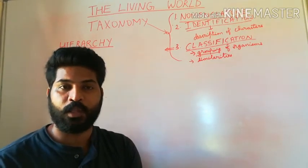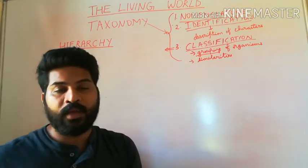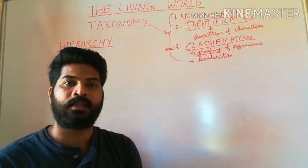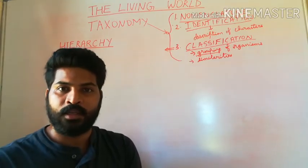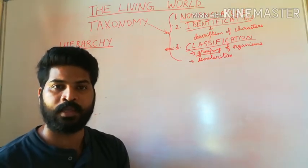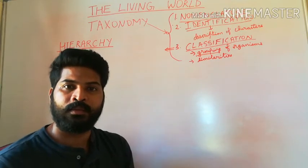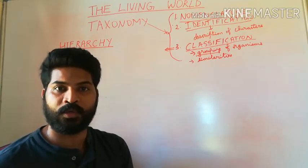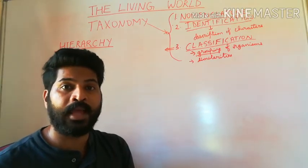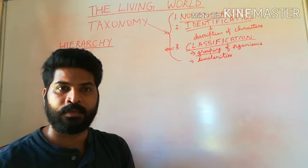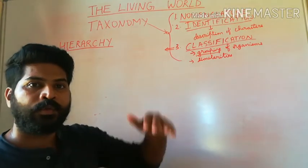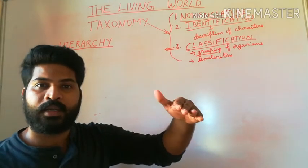Let us say it is an animal. There are millions of animals — animals include fishes, reptiles, birds, mammals, insects, etc. So which type of animal is it? Is it a bird, a reptile, or a mammal? Let us say it is a mammal. Then is it a carnivore or a herbivore? Does it stay on trees or on land? Does it have a backbone or not? All of these are questions we need to address before we classify the organism.